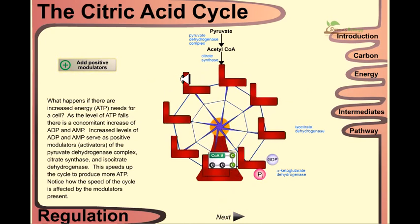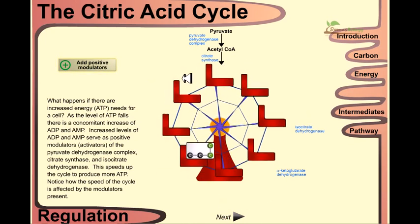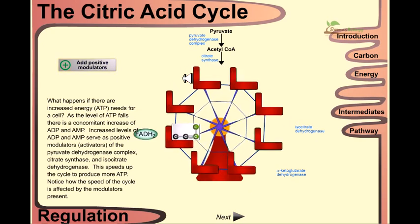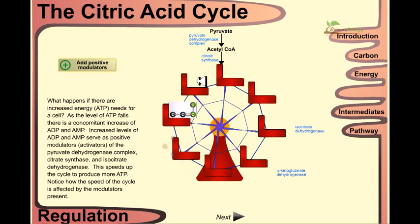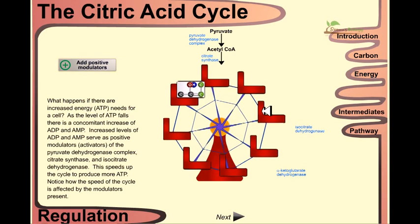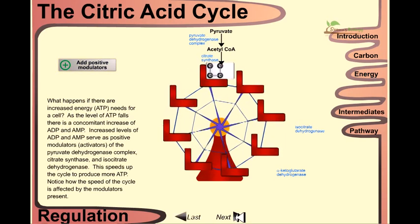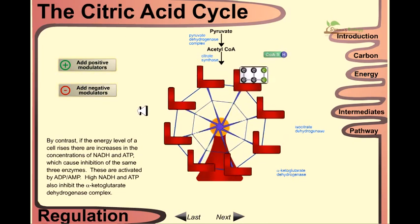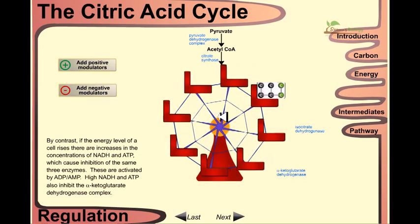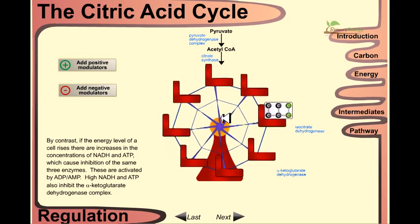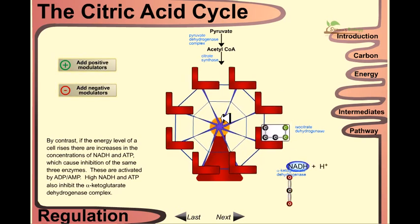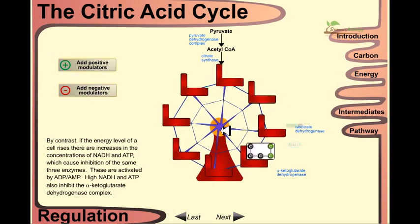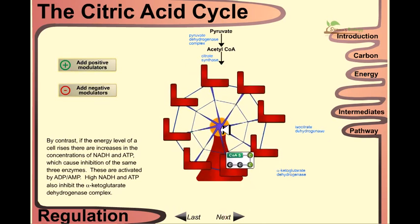If we add the negative modulators like ATP, acetyl CoA, or citrate, the reaction steps will be further slowed down. By contrast, if the energy level for a cell rises, there are increases in the concentration of NADH and ATP, which causes the inhibition of the same three enzymes that are activated by ADP and AMP.